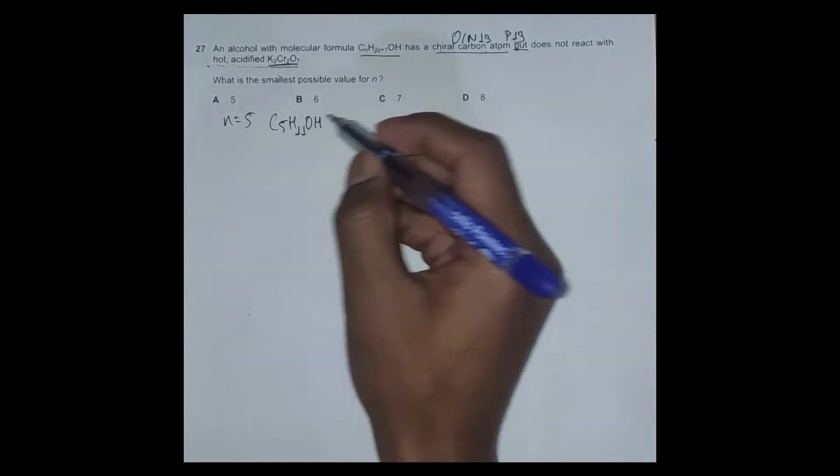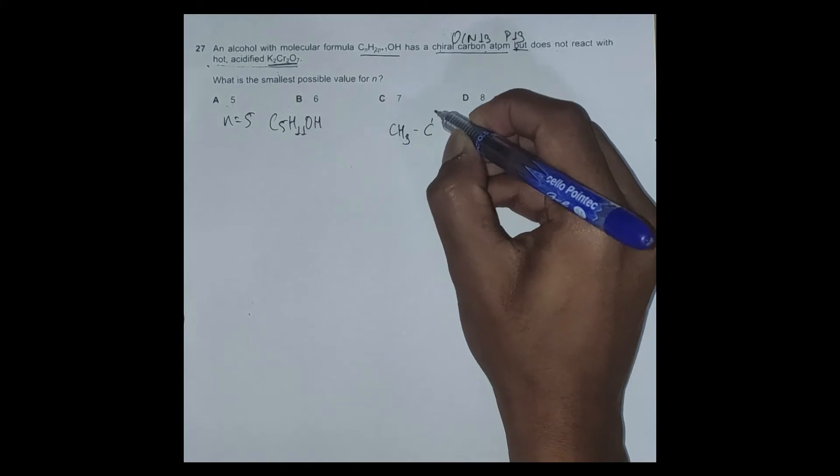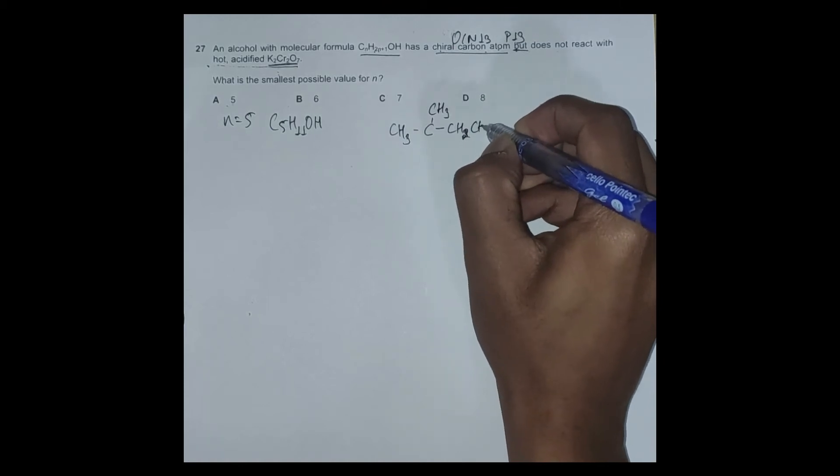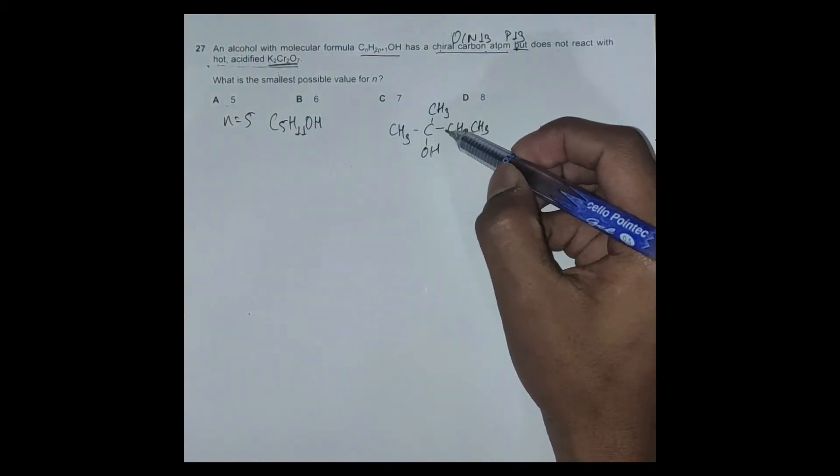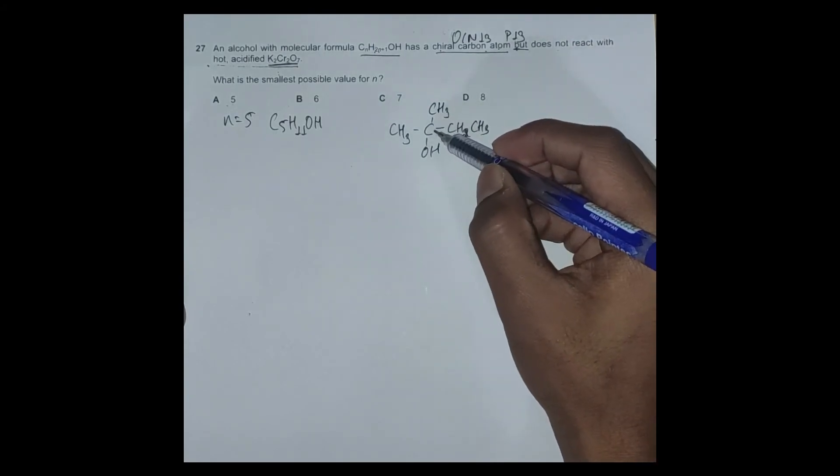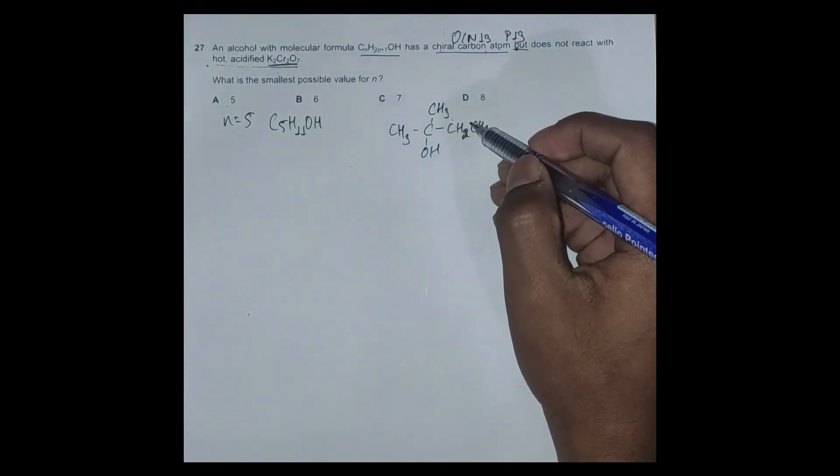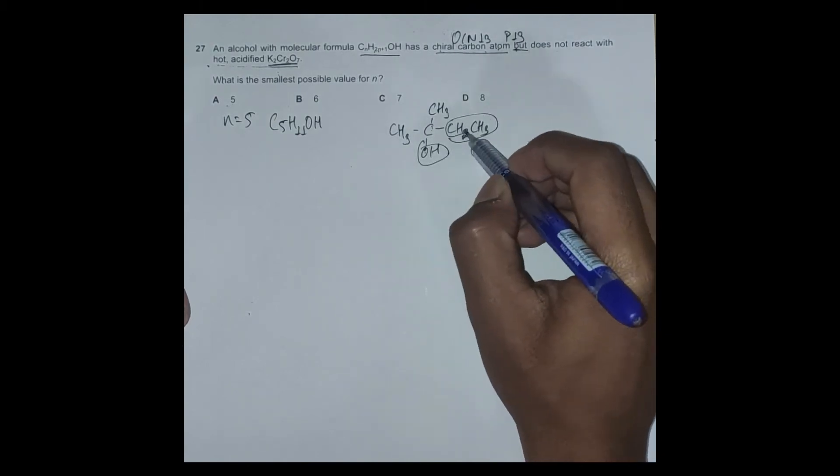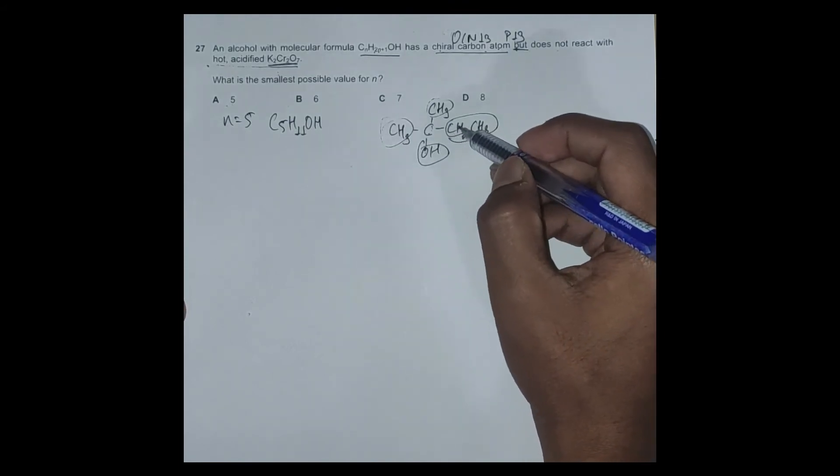So there has to be branching for this: CH3-C with one CH3 here and CH2CH3, and we have an OH. So this is our tertiary alcohol. But it is not a chiral carbon atom because no matter whether we have a branched carbon atom here or here, the thing is the same. This has OH on one side, CH2CH3 on one side, but two CH3 on the same side. So option A is not correct.